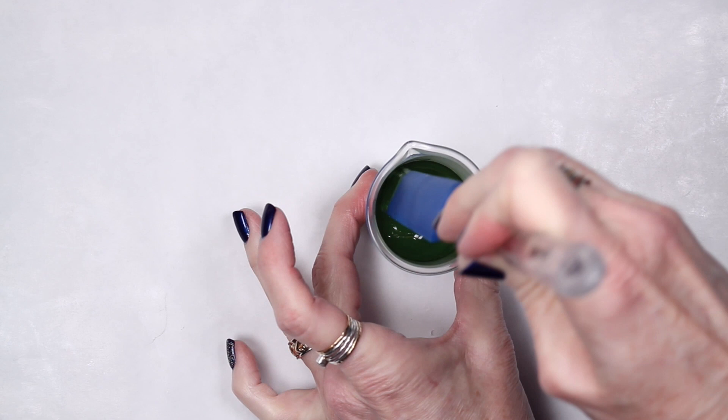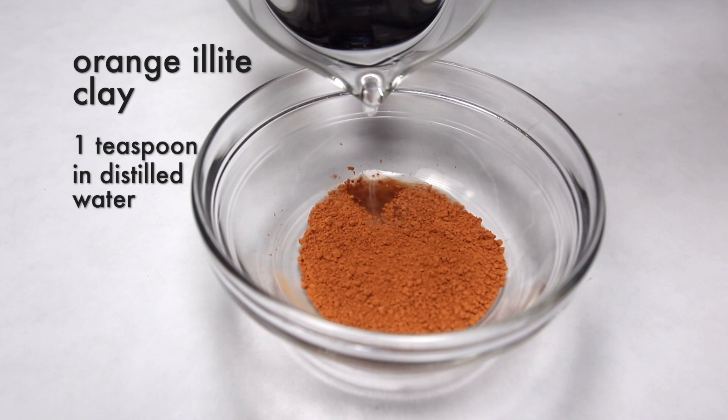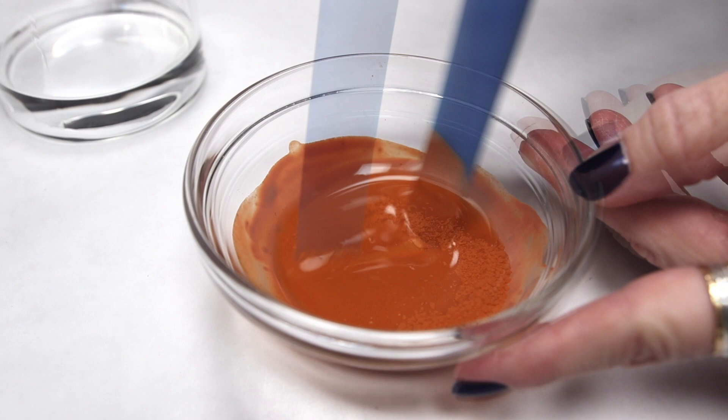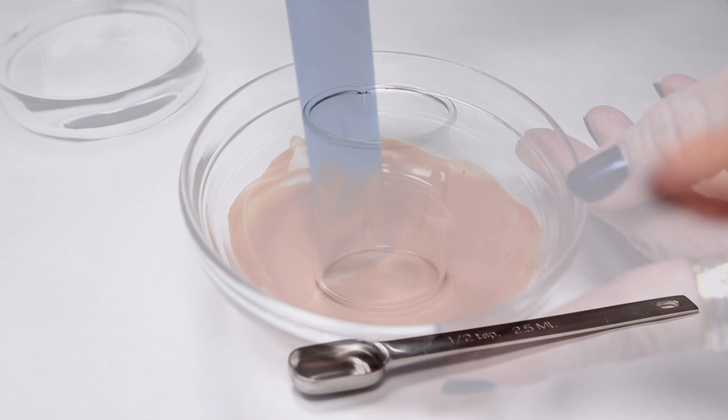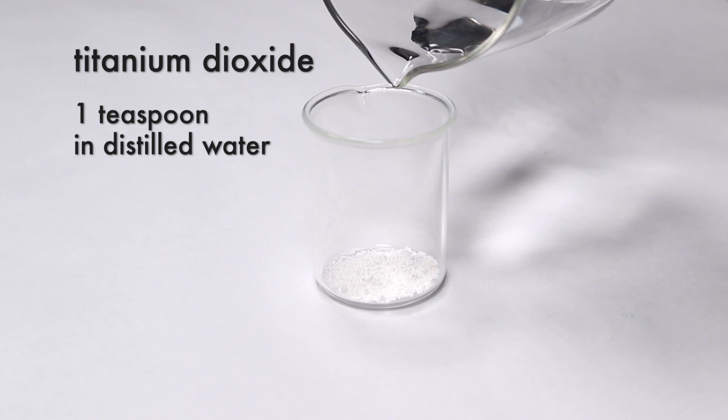I next measured out about one teaspoon of orange mica clay and added just enough water for the clay to be fluid. I almost always hydrate my clays just so they're easier to incorporate into the soap without too much blending. For my white color, I measured out one teaspoon of titanium dioxide and added enough water so the powder dissolved completely.